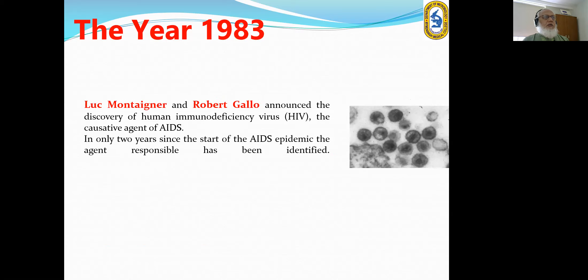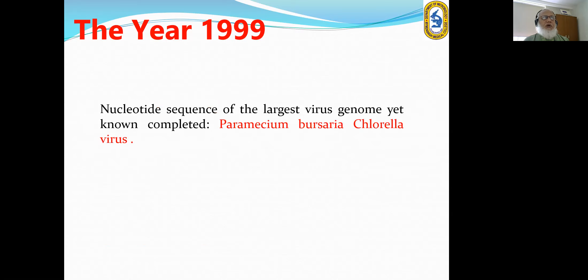In 1983, Luc Montagnier and Robert Gallo announced the discovery of human immunodeficiency virus (HIV). In only two years, the agent responsible for the AIDS epidemic had been identified.